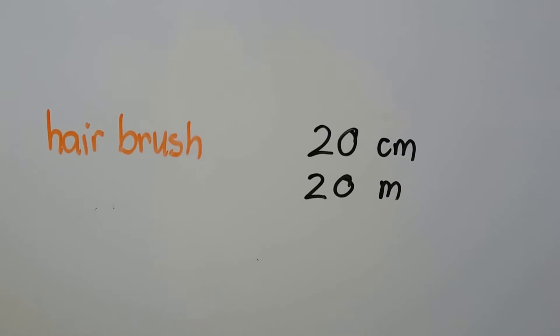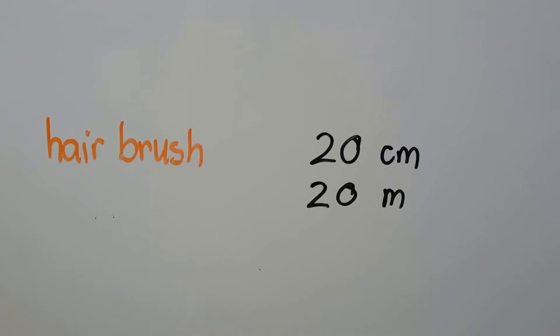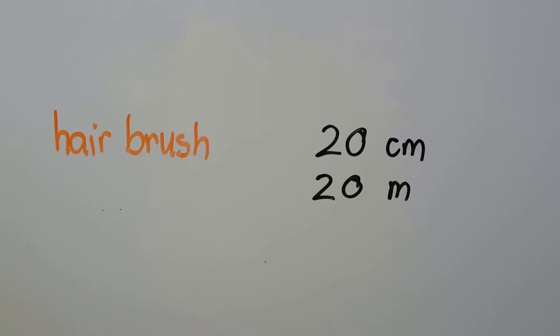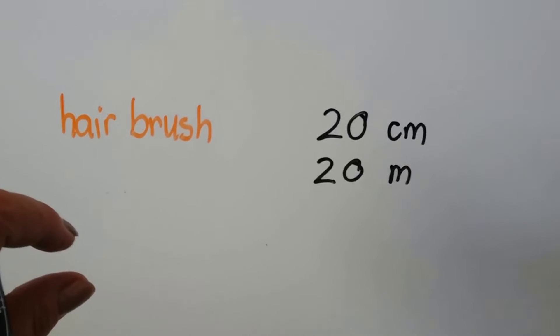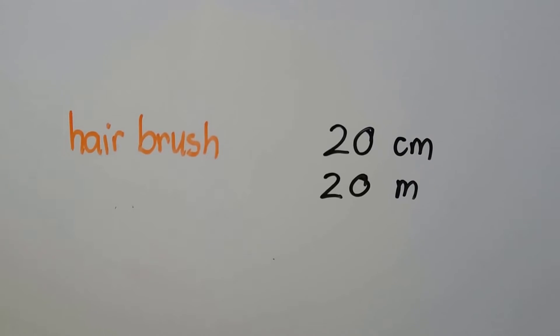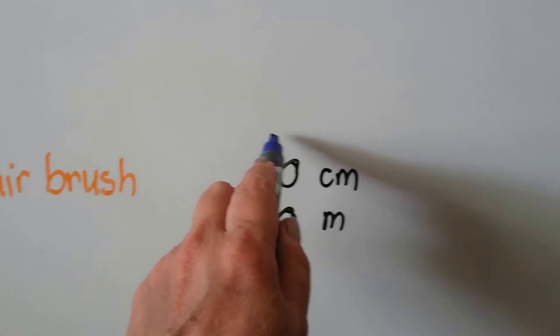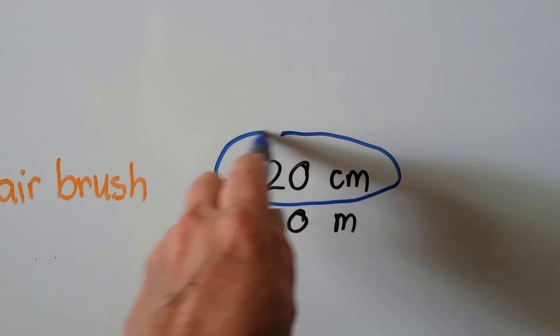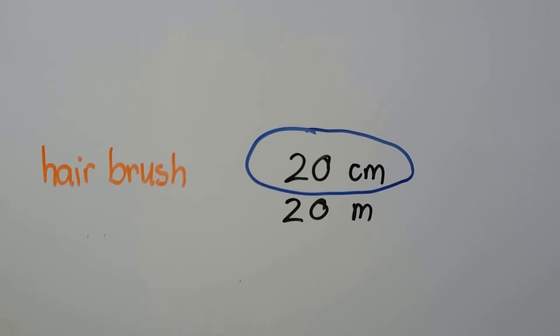How about a hairbrush? Do you think a hairbrush would be 20 centimeters or 20 meters? Now remember, a centimeter is about that big. So if you said about 20 centimeters, you're right. If the hairbrush was 20 meters, we wouldn't even be able to pick it up, would we?